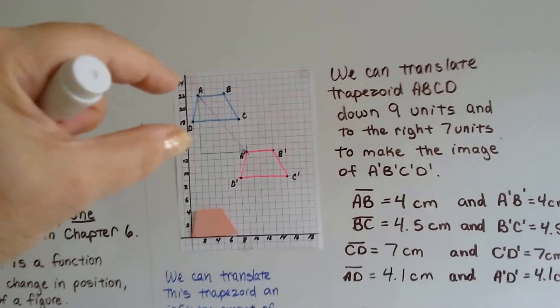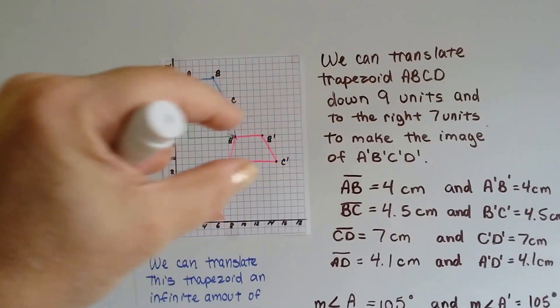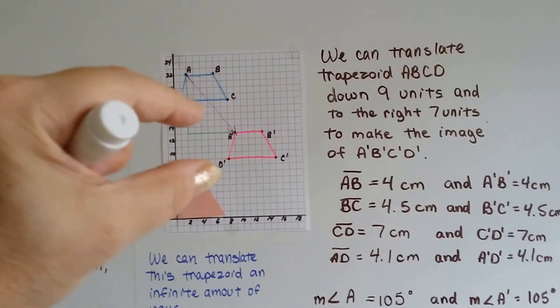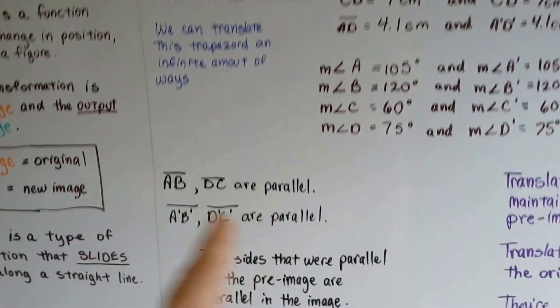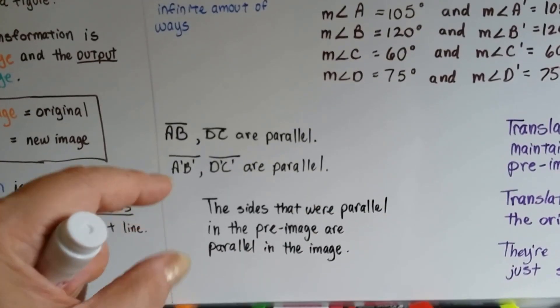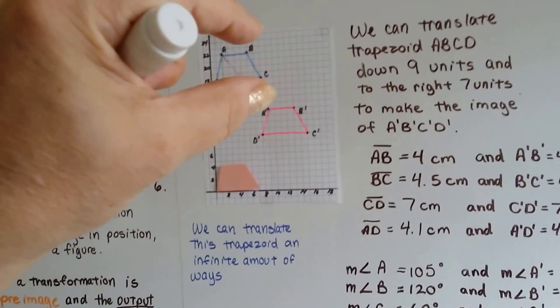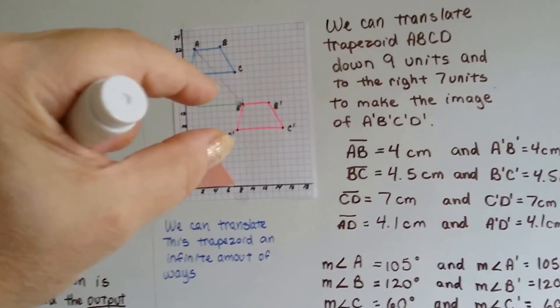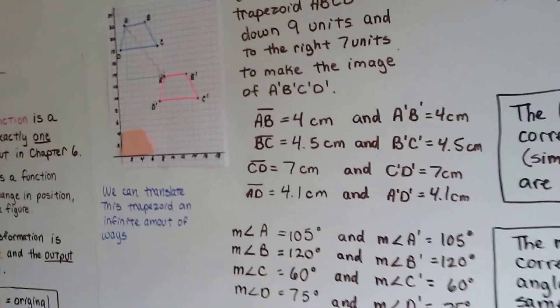If we look at line AB and CD, and A prime B prime and C prime D prime, we can see that they have parallel lines that are matched. The sides that were parallel in the preimage are parallel in the image. These two lines are parallel, these two lines are parallel. They have a lot of things in common.